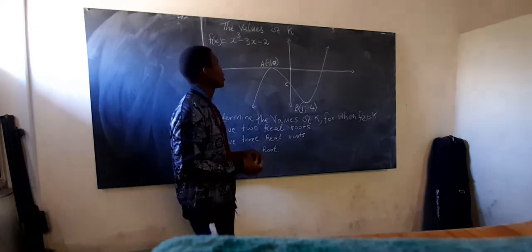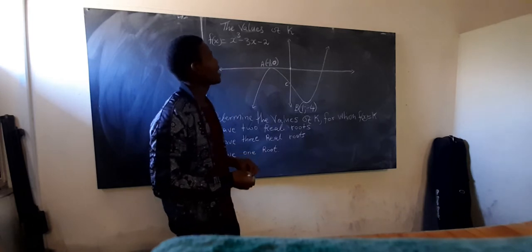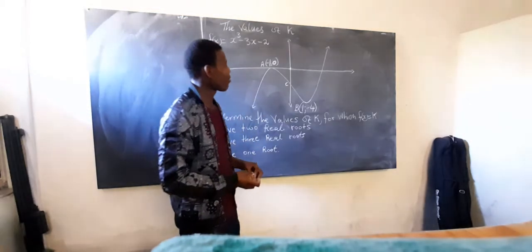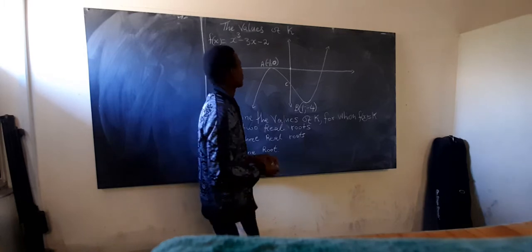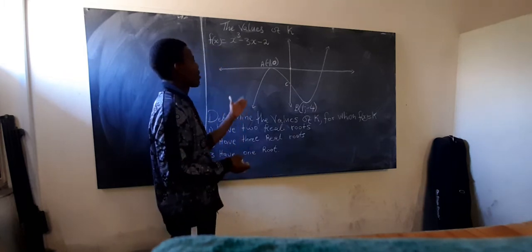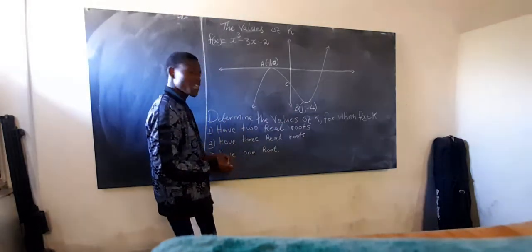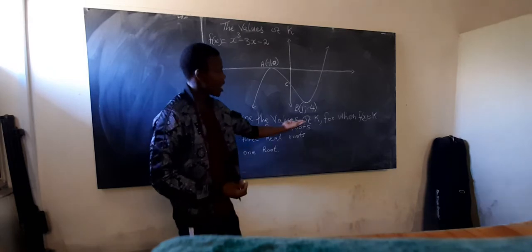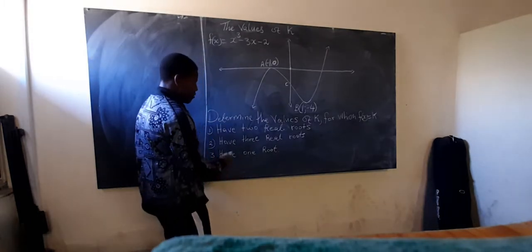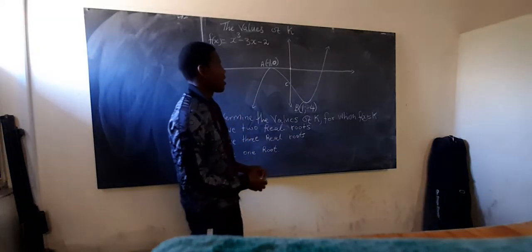This is the cubic function. The question focuses on finding the values of k where f(x) = k cuts the graph a given number of times. f(x) is given as x³ - 3x - 2 and the graph is drawn with turning points shown. The question asks us to determine the values of k for which f(x) = k has two real roots, three real roots, and one real root.